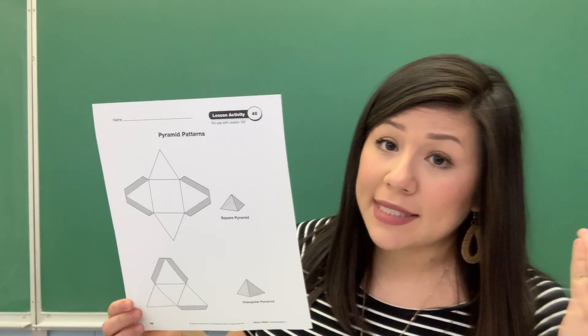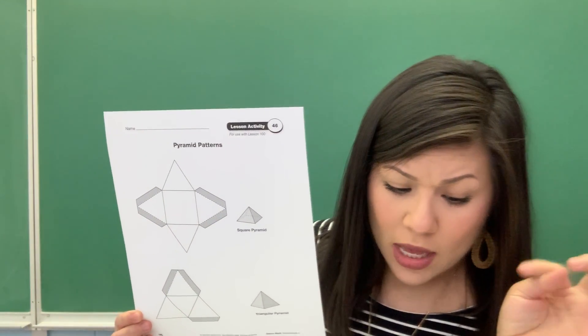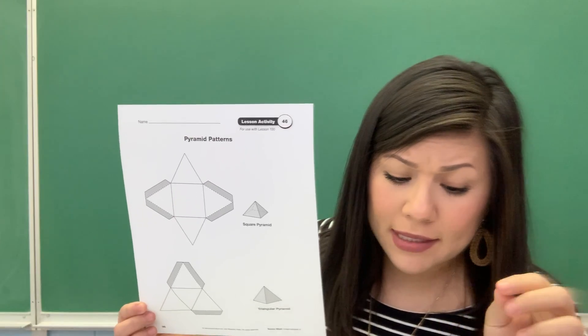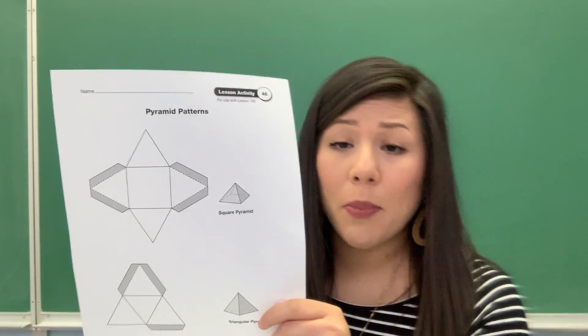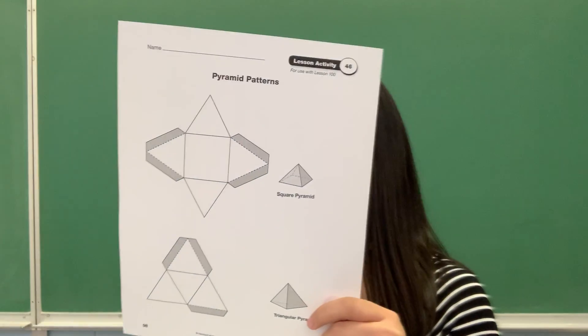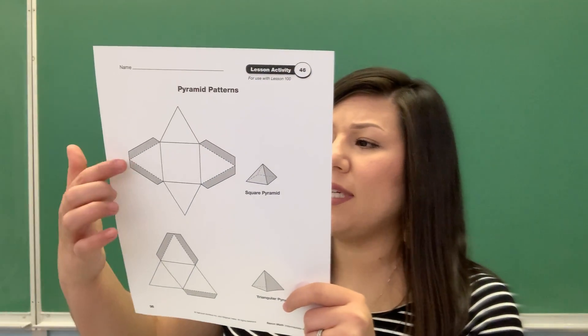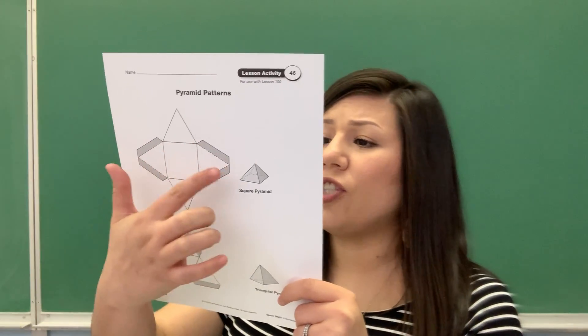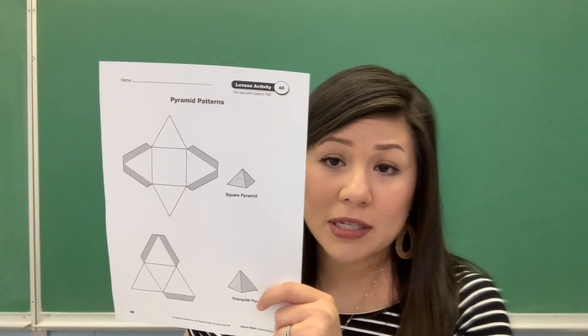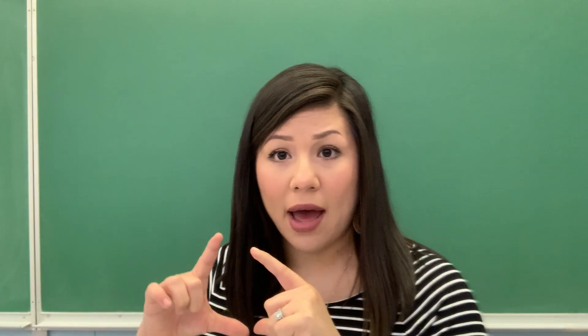You're going to do much like we did yesterday. You are going to cut this out — cut out the patterns for the pyramids. The shaded parts of each pattern are tabs to help hold the figures together. What you're supposed to do is use these tabs to hold the shapes or prisms together. If you have tape or glue at home, go ahead and tape those up, and you should have a pyramid by the end.